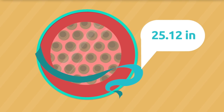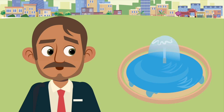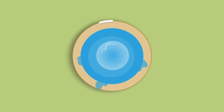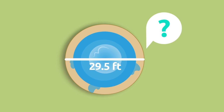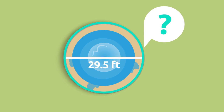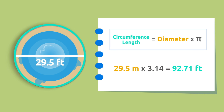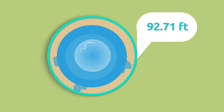Let's look at another example. The mayor wants to put a fence around the fountain of the village. The fountain has a circular shape and its diameter is 29.5 feet — how many feet of fencing material does he need to buy? We multiply the diameter by pi. The mayor needs to buy 92.71 feet of fencing material to surround the fountain.